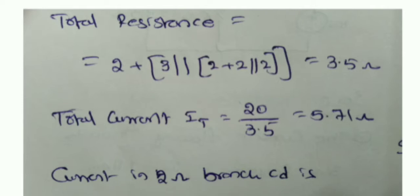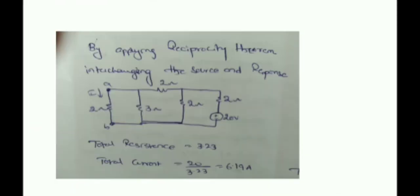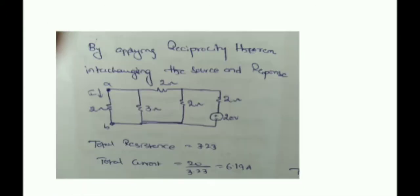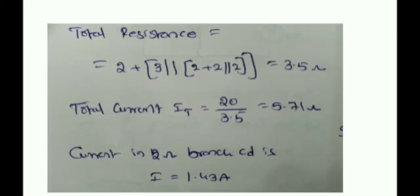You need to calculate the current through the CD branch, not just the total current. You already have the total current value. By means of the current division principle, you can get 1.43 amperes through the CD branch. This is the result for case 1.